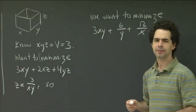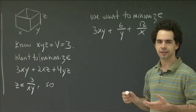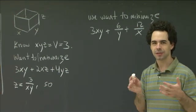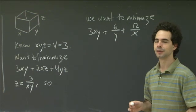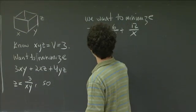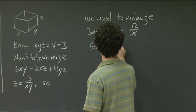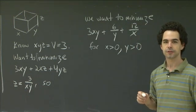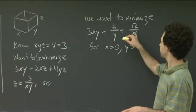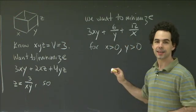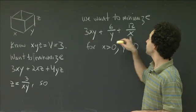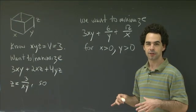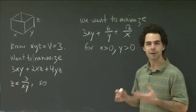One thing we haven't mentioned explicitly is that this is a physical box with actual dimensions, so its dimensions have to be positive numbers. So we want x to be positive and y to be positive. Now we've got this function, and for any positive x and y, this describes the amount of cardboard used in a box with those base dimensions and volume 3. We want to minimize that — now we've finally got to the point of our calculus.